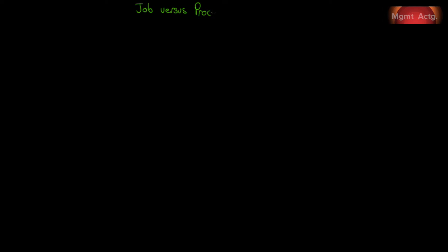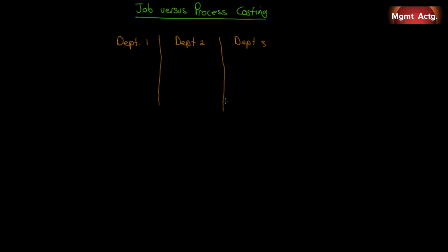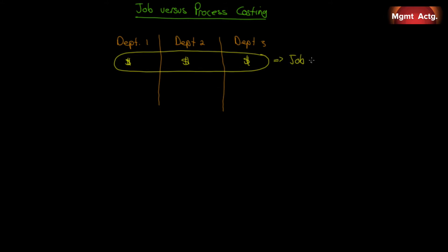We're going to look at the difference between job and process costing as we start the chapter on process costing. Let's think of how jobs flow through a factory — we have processing department one, perhaps department two, maybe even another one. In a typical job costing system, costs associated with the work done in each department are all tracked by job. Take job A619 for example — all of these costs would accrue to this job. Costs accumulate by job.